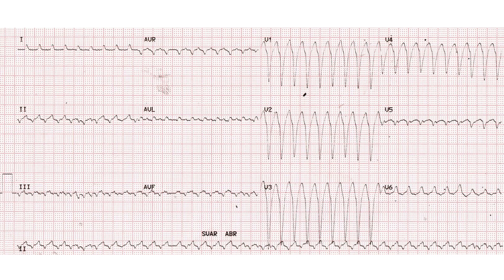Atrial flutter with 1-to-1 conduction and aberrant ventricular conduction is another possibility to be considered with this fast rhythm. But the usual rate of atrial flutter waves is 300 per minute, unless the flutter has been slowed by some other mechanism. Presence of dissociated P waves is against the diagnosis of atrial flutter. Other types of supraventricular tachycardia with aberrancy of ventricular conduction are also excluded by the same feature.